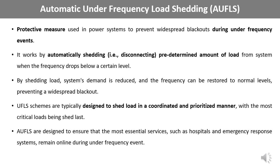Automatic under-frequency load shedding, or UFLS, is an essential protective measure used in power systems to prevent widespread blackouts during under-frequency events. Under-frequency events can occur due to several reasons including sudden loss of generation, increase in load demand, transmission line or equipment failures, frequency regulation problems, overloading of distribution networks, and failure to follow grid codes. UFLS works by automatically shedding a predetermined amount of load from the system when the frequency drops below a certain level. By shedding load, the system's demand is reduced and the frequency can be restored to normal levels, preventing a widespread blackout. UFLS schemes are typically designed to shed load in a coordinated and prioritized manner, with the most critical loads being shed last.